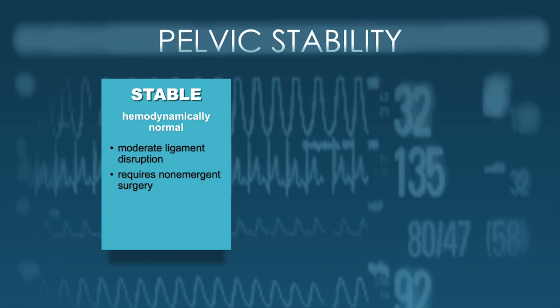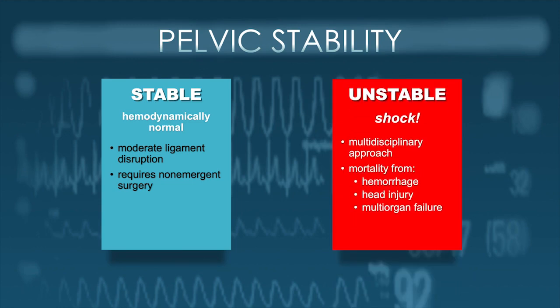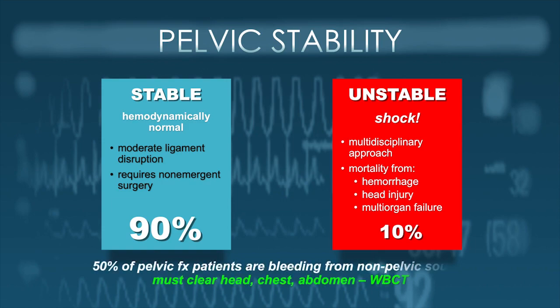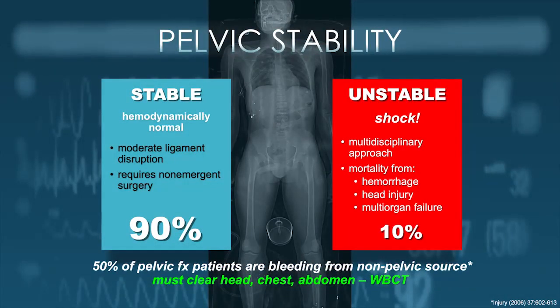We have stable injuries where the patient presents with moderate ligament disruption and requires non-emergent surgery. In contrast, the unstable situation where the patient can present in shock really requires a huge multidisciplinary approach to keep these patients from bleeding out, addressing head injuries and risks of multi-organ failure. Thankfully, stable presentations are the vast majority—about 90% of these patients. We also have to think about hemorrhage from non-pelvic sources, which occurs in about 50% of pelvic fracture patients, so we integrate these patients with whole-body CTs.